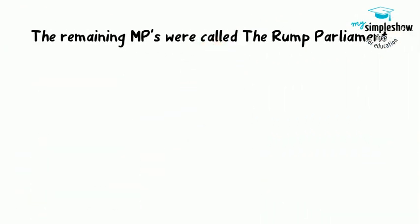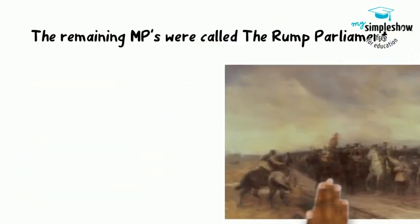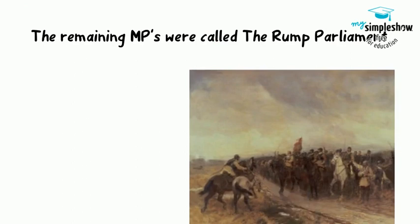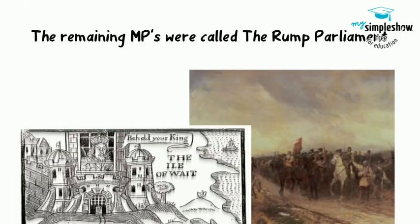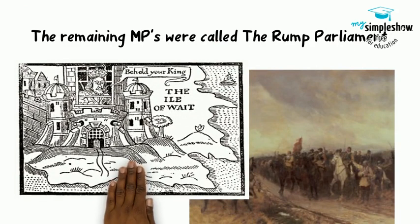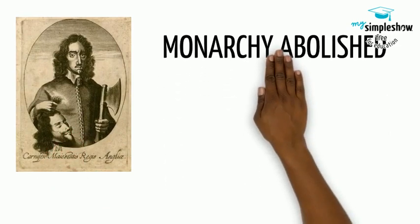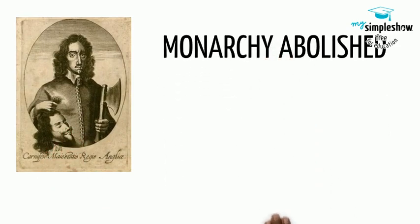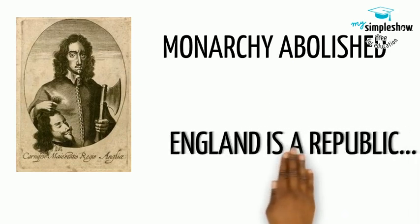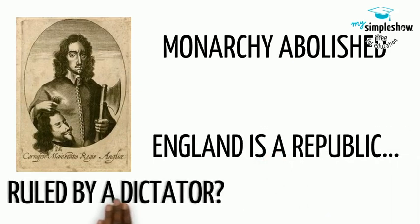Cromwell began by purging Parliament of Loyalists to Charles. By 1646, Charles surrendered to the Scots and the New Model Army. He then escaped and was recaught. Cromwell finished by crushing the Cavalier resistance. Cromwell tried, convicted, and then executed Charles with beheading.